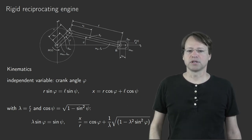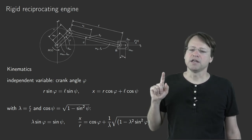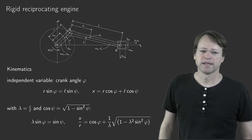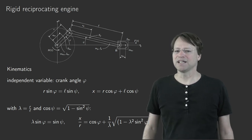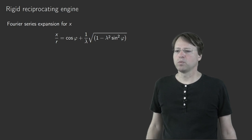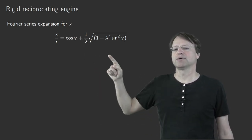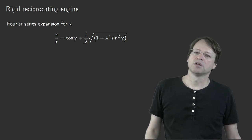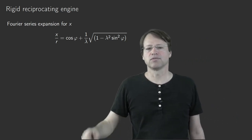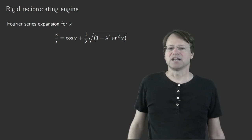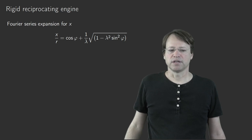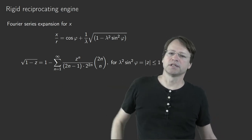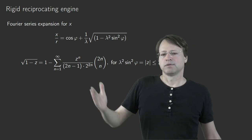We want a Fourier series expansion for x. Our starting point is the full expression, and we first focus on the square root and represent it by a power series. Writing the square root as √(1 − z), we look up the power series representation: √(1 − z) = 1 − Σ (from n=1 to ∞) of z^n / [(2n−1)·2^(2n)] · C(2n, n), where C(2n, n) is the binomial coefficient. This power series converges for |z| < 1.